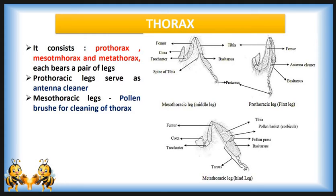The mesothoracic leg has bushy or hairy tarsal segments, and they serve as a brush for cleaning the thorax. A long spine at the end of the middle tibia is used for loosening pellets of pollen from the pollen basket of the metathoracic leg, and also for cleaning wings and spiracles.